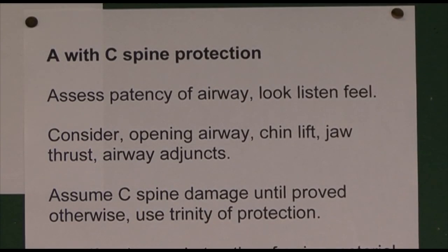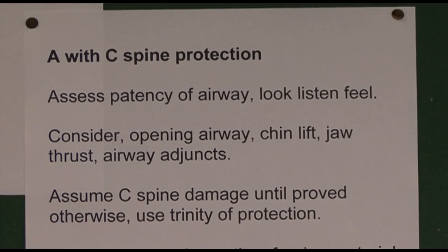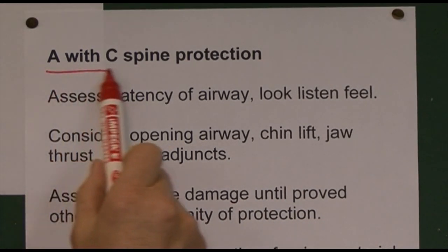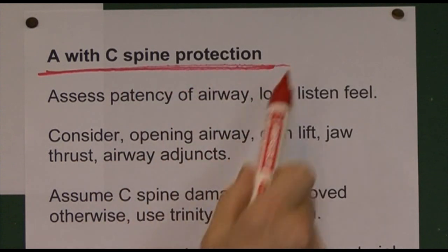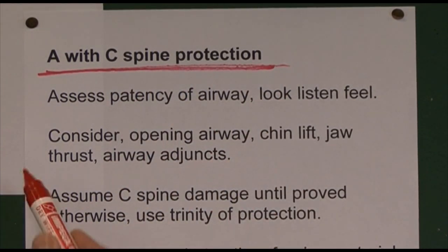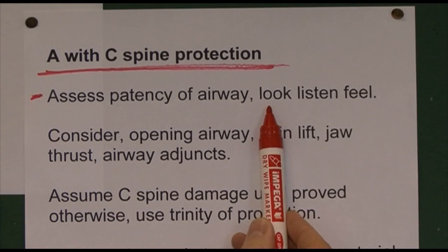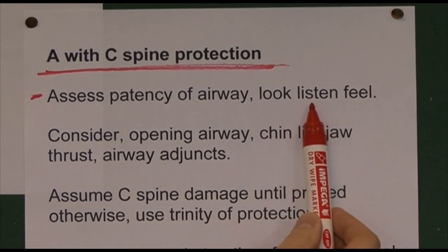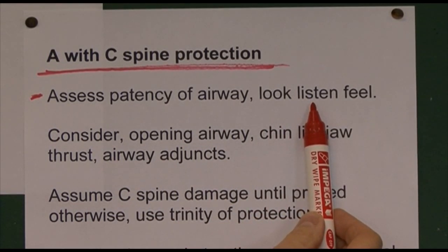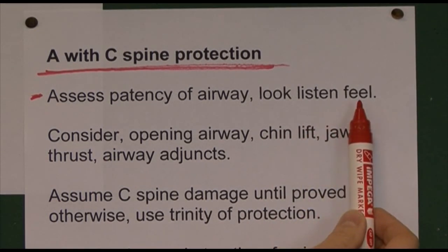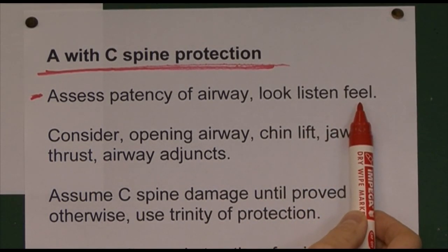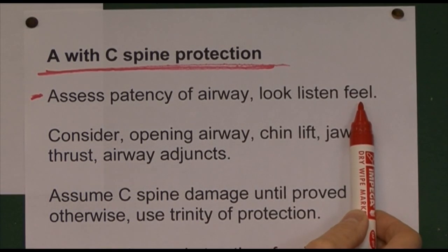Because this is so important, I'm going to run through it on the notes. The first priority is A — with C-spine protection, we assess the patency of the patient's airway. We look at the chest movements, we listen for the air going in and out of the patient's nose and mouth, and we can feel for the air.